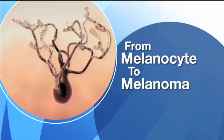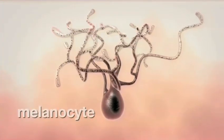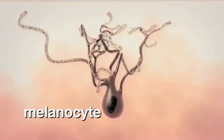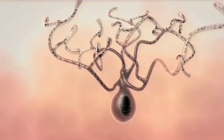From melanocyte to melanoma. Melanocytes are cells that produce melanin, a brown-black pigment that determines the color of the skin, hair, and eyes in humans, and helps to guard against the damaging effects of the sun.